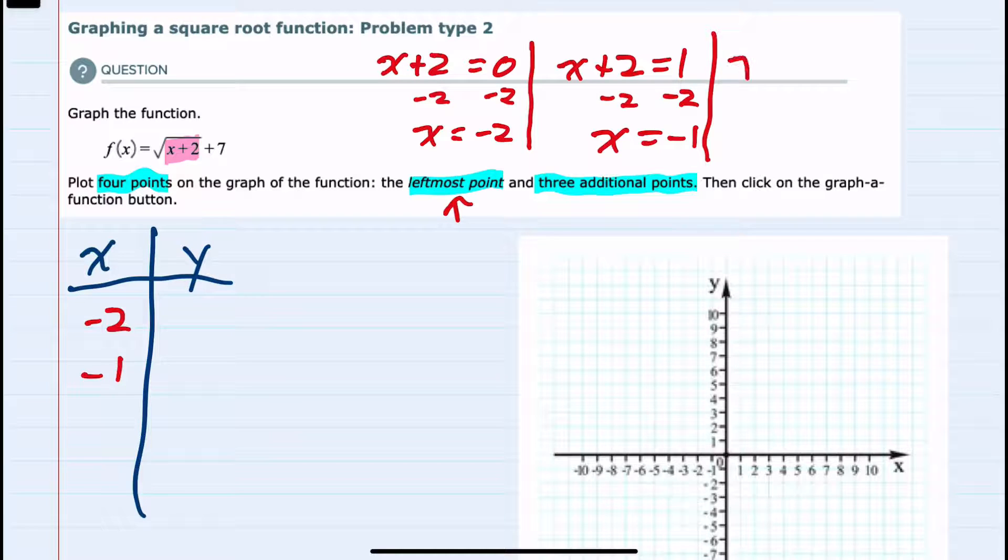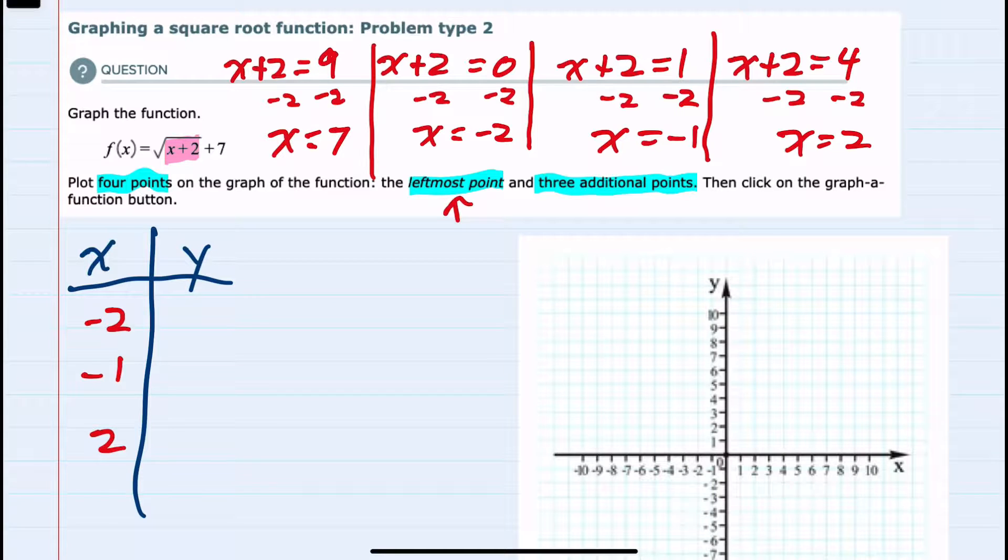Another perfect square would be when that x plus 2 equals 4, happening whenever x equals 2. And then since we need a total of 4 points, I'll use one more perfect square. I'll find out where x plus 2 equals the next perfect square, which is 9. And that happens when x equals 7.